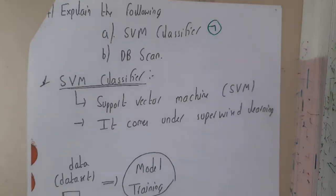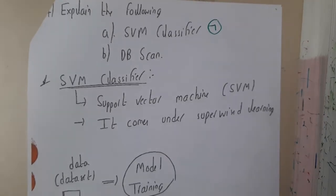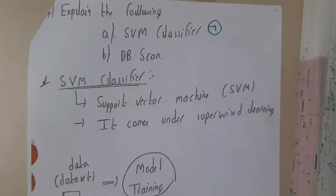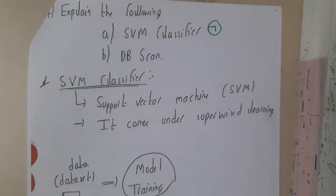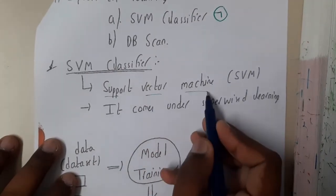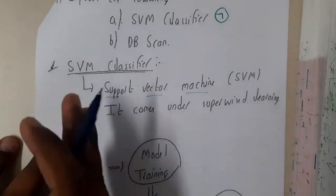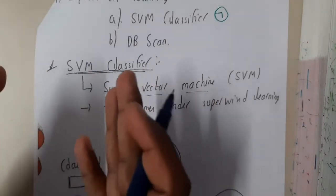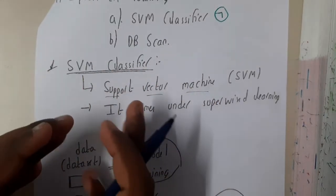Hello guys, we are back with the next lecture. In this lecture, let us go through the common question that is SVM classifier. So basically, what is SVM classifier? SVM classifier is a support vector machine. It is a classification algorithm which comes under supervised learning because the input data which we are going to give is pre-labeled data.